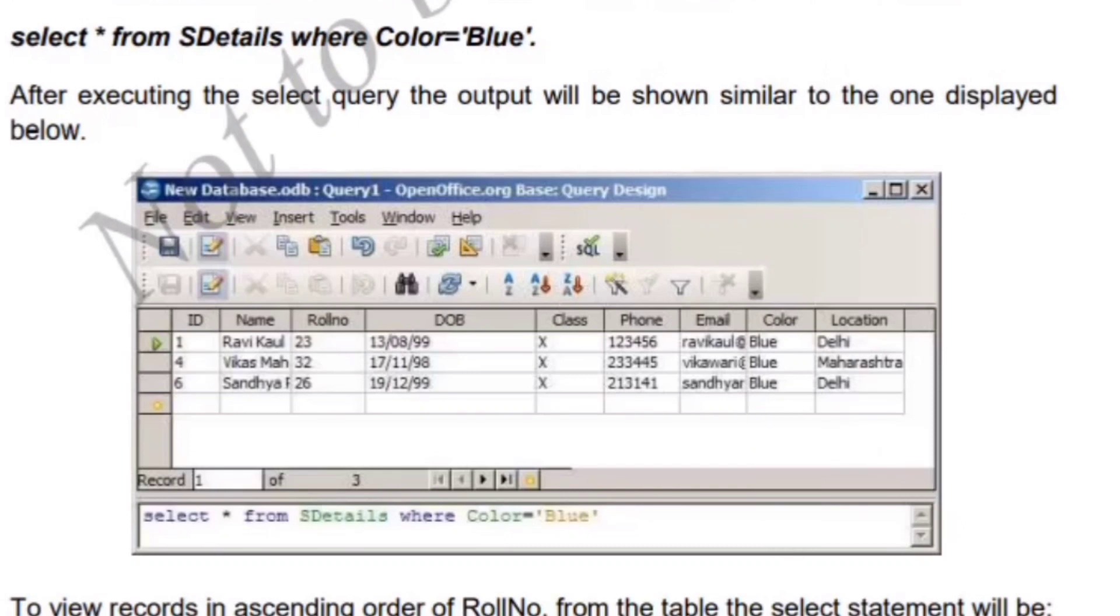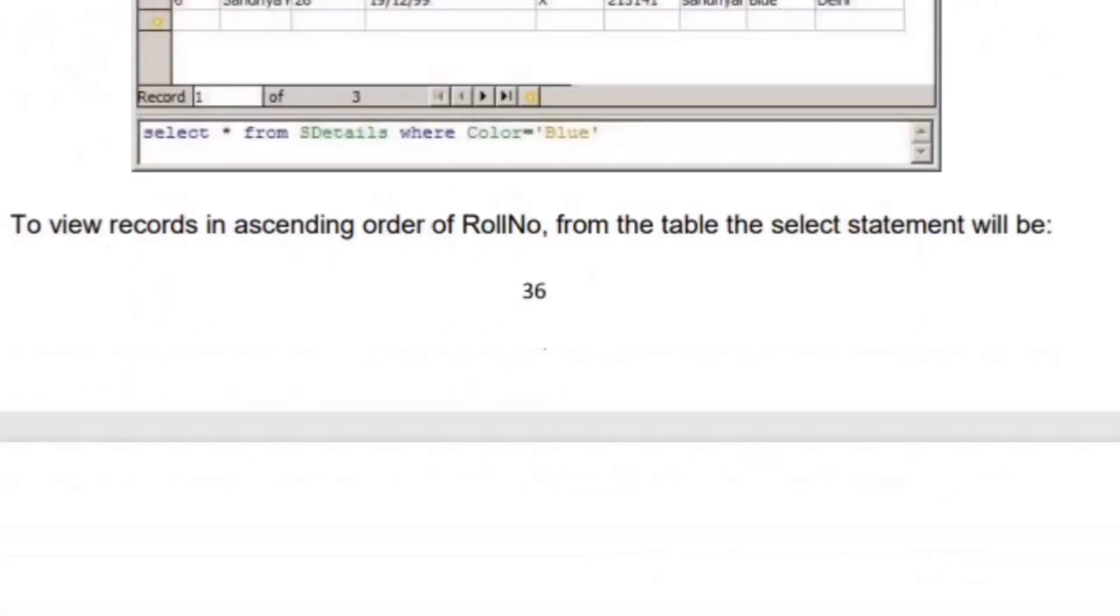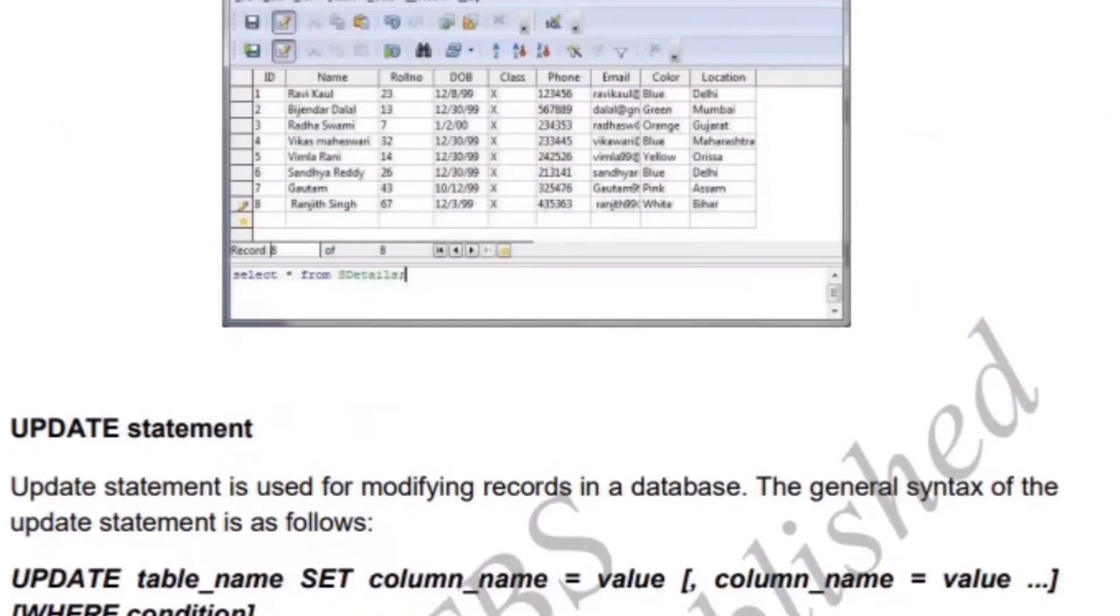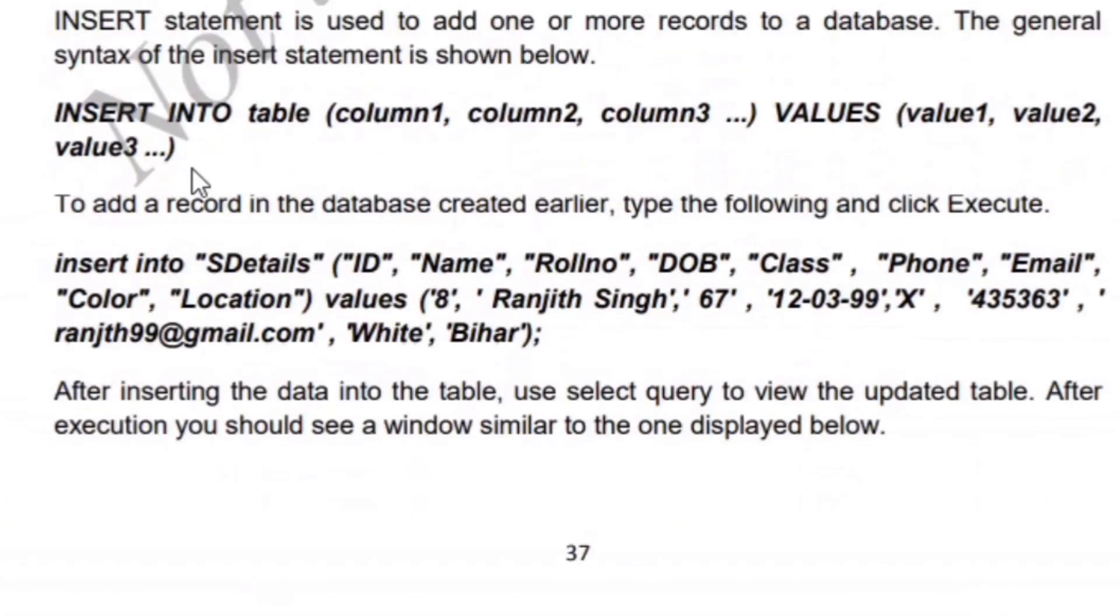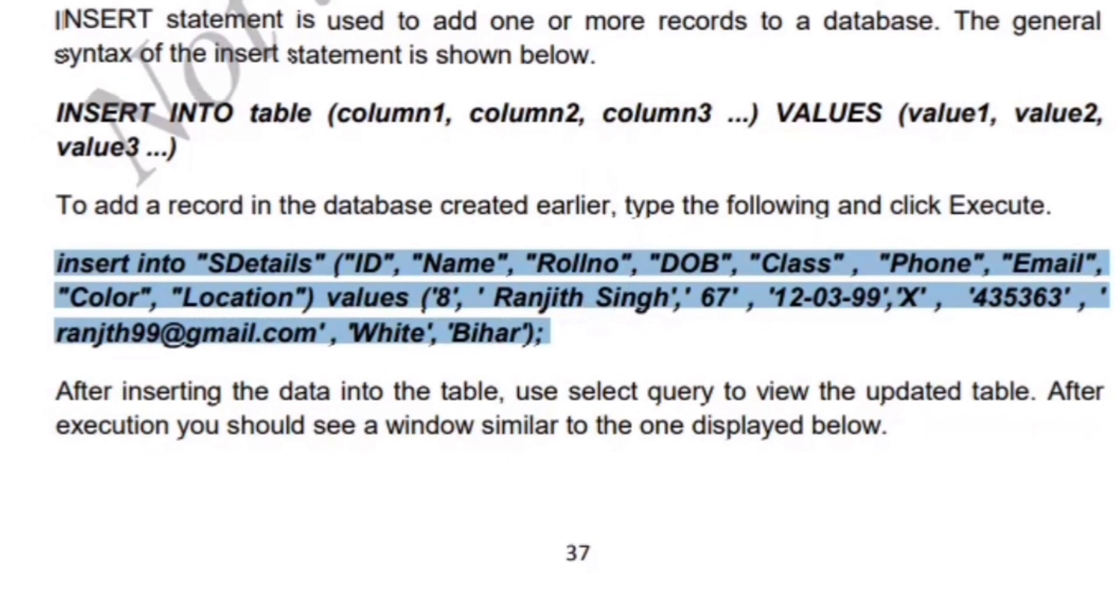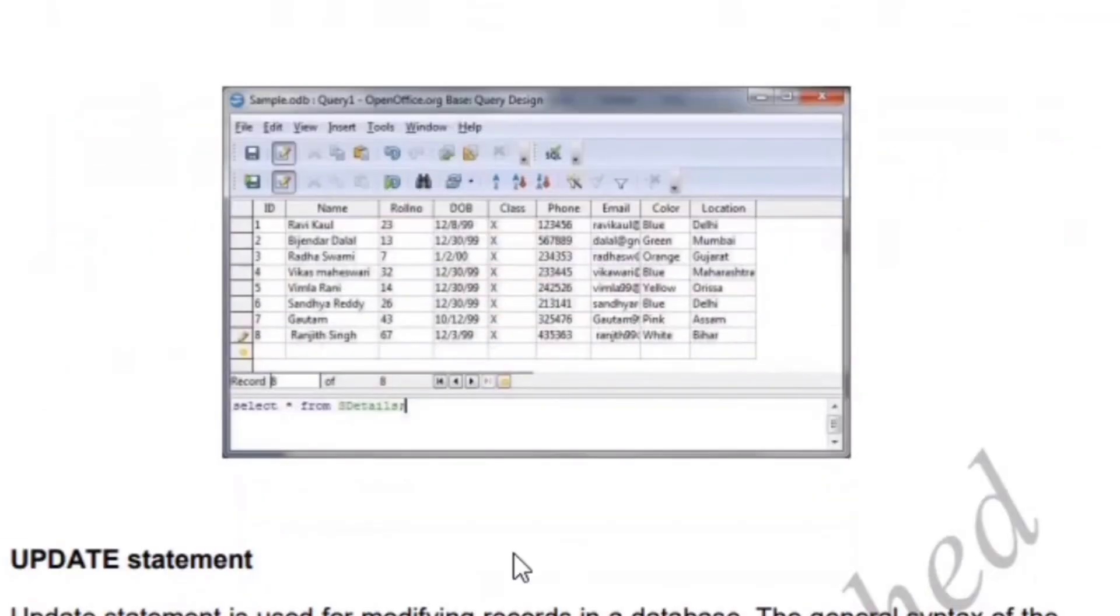And after writing the syntax for insert statement, write down these formulas like INSERT INTO s_details with the column names: ID, name, role number, date of birth, class, phone number, email, color, location, and the values. Values comes as like ID includes 8 numbers and name includes Ranjit Singh, date of birth includes like 12/3/1999, phone number includes the numbers and email includes the email ID. And while coming to color, it's white and for location Bihar.